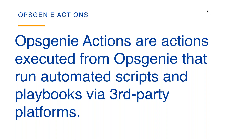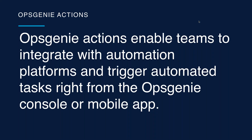We're going to spend 99% of the time in a demo led by John, but first a quick overview. If you're new to OpsGenie Actions, basically Actions is a new way that you can take and execute actions directly from OpsGenie and run automated scripts and playbooks via different third-party platforms we've integrated with. Teams and individuals can integrate with those automation platforms and trigger tasks right from the OpsGenie console or even from the mobile app. You can set things to run automatically without human interaction for remedial tasks, or add a manual step where you click a button for that layer of control.